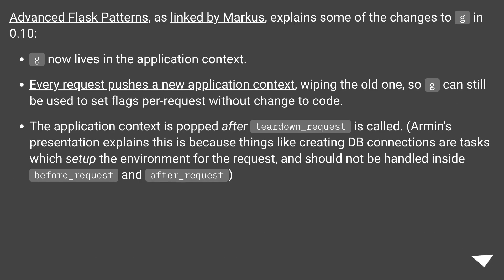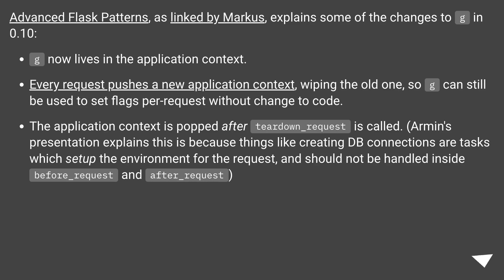Advanced Flask Patterns, as linked by Marcus, explains some of the changes to g in 0.10. g now lives in the application context. Every request pushes a new application context, wiping the old one, so g can still be used to set flags for a request without change to code. The application context is popped after teardown_request is called. Armin's presentation explains this is because things like creating database connections are tasks which set up the environment for the request, and should not be handled inside before_request and after_request.